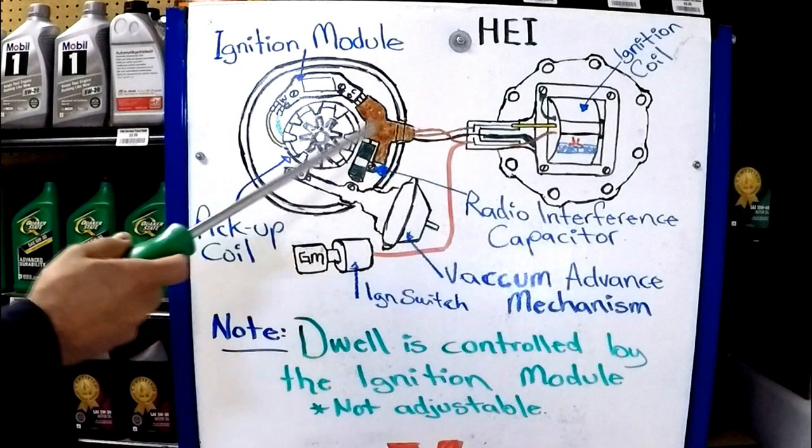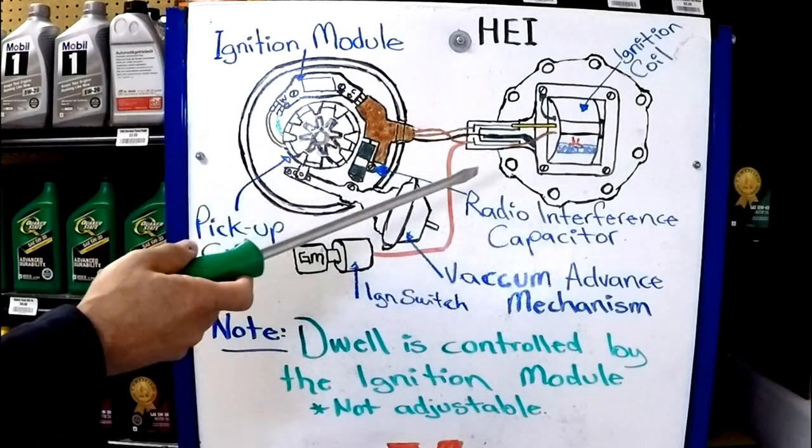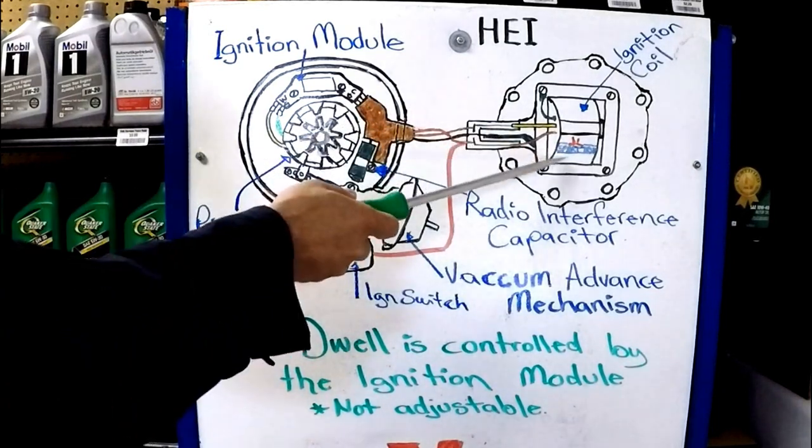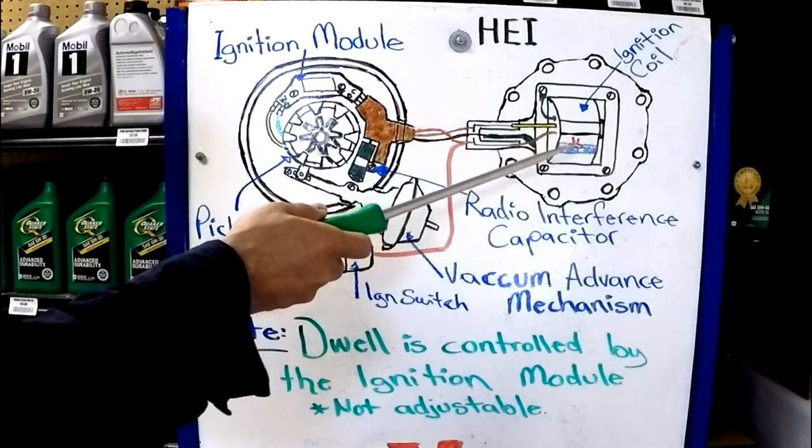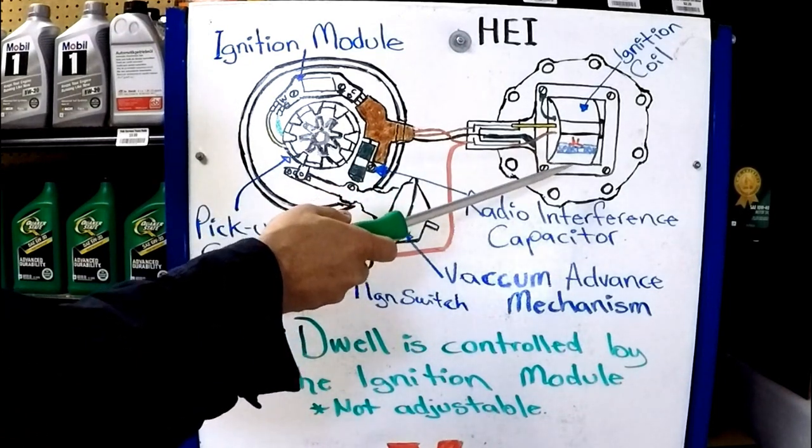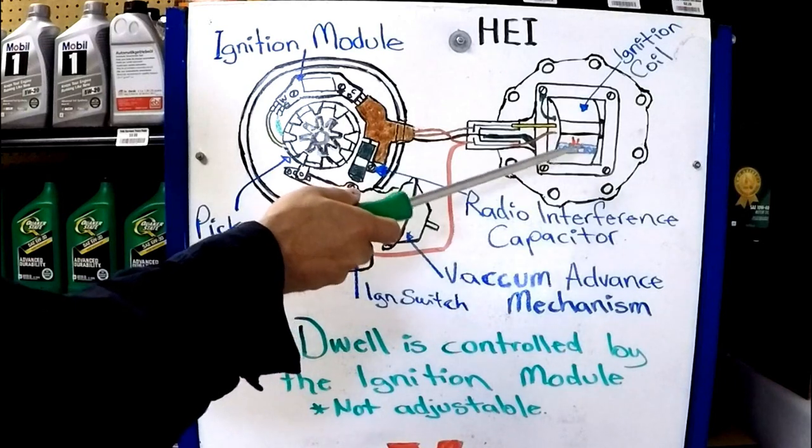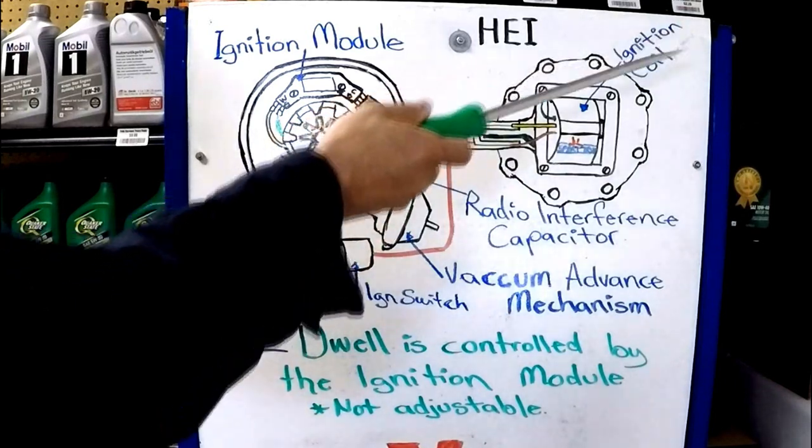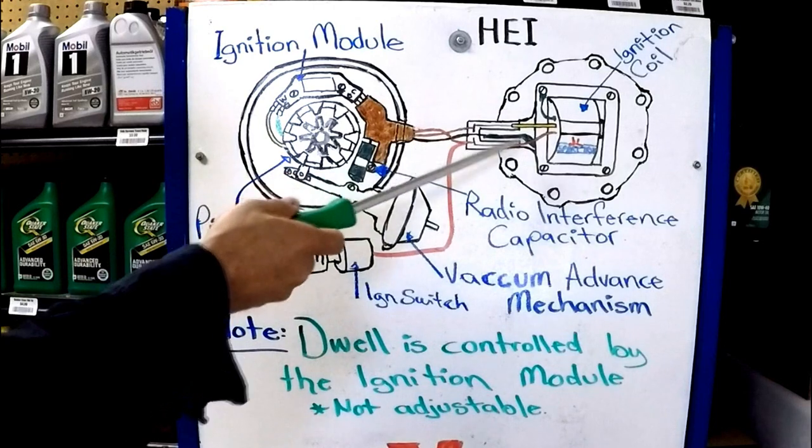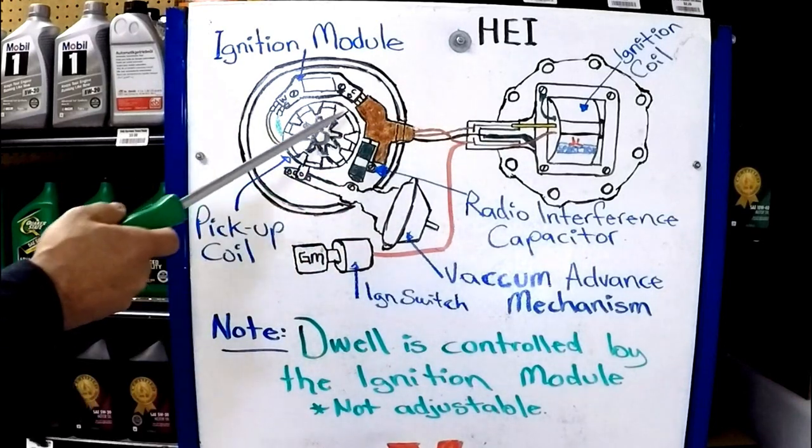The similarity between electronic ignition and the points and condenser setup is that the ignition coil still needs an on and off signal to collapse the magnetic field, so there is current sent to the cap and to the rotor, and from then to each cylinder. What makes the electronic ignition more efficient and more durable is that there are no points anymore.